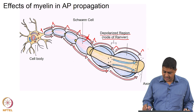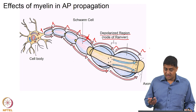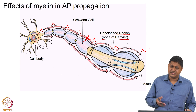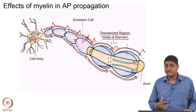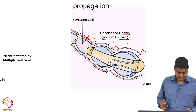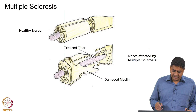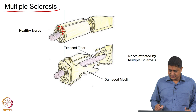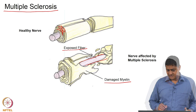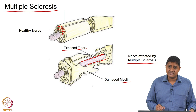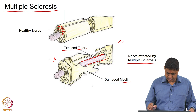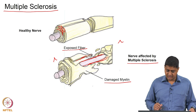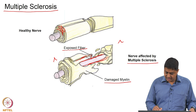Myelin increases the probability that an action potential will be propagated by a very high factor — it increases conduction velocity and also increases the length constant. In diseases such as multiple sclerosis, the axon becomes exposed. Myelin structure and function is compromised such that action potentials cannot travel from one node of Ranvier to the next, because myelin is damaged and the exposed axon region does not have many voltage-gated channels.